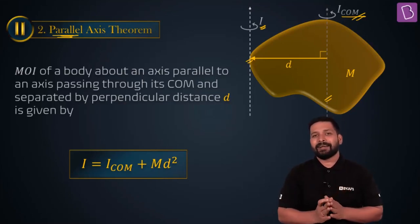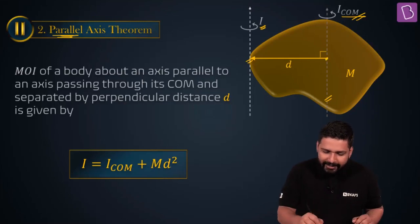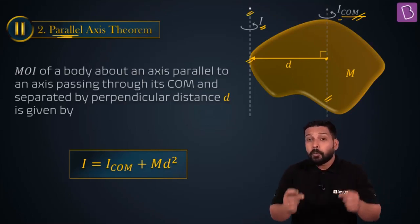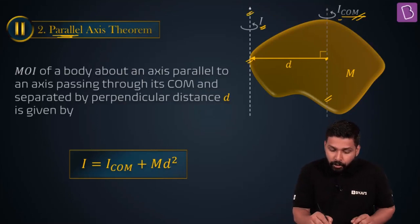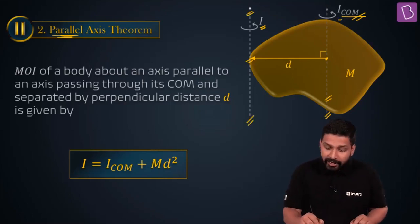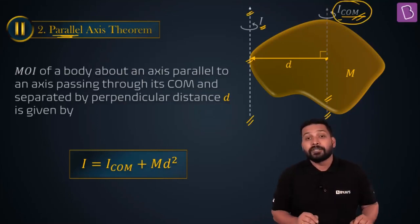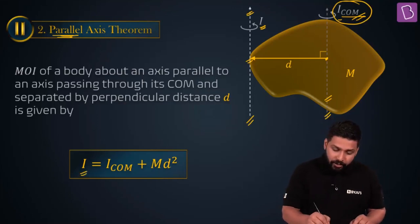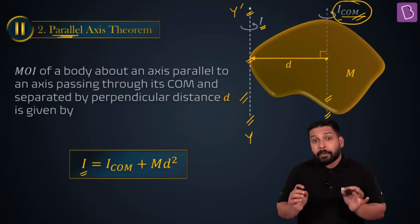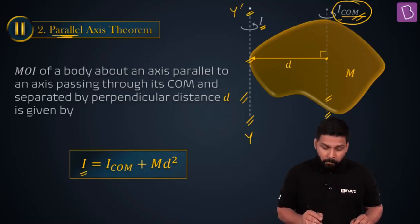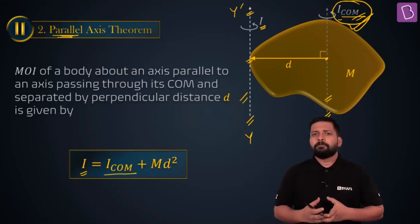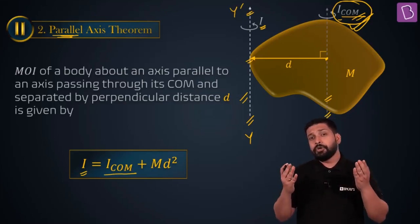The other axis has to be parallel. You can see that in this case this axis is passing through the point of center of mass, and another axis — about which you want to find the moment of inertia — is parallel to it. Then we can write: moment of inertia about this particular axis, let's name it YY', is equal to the moment of inertia about its center of mass.